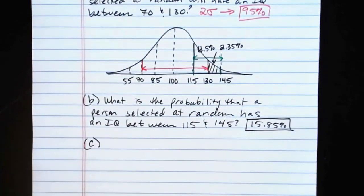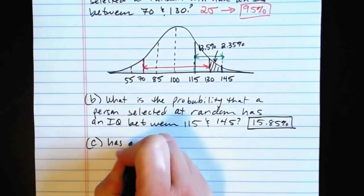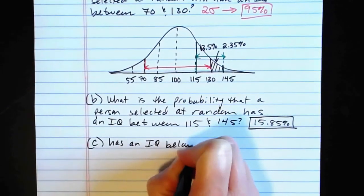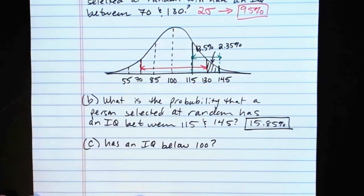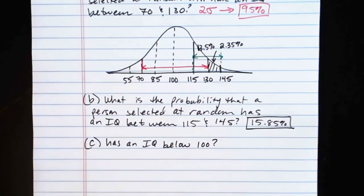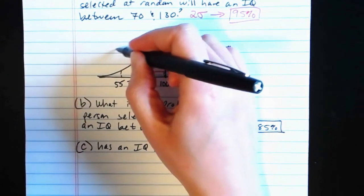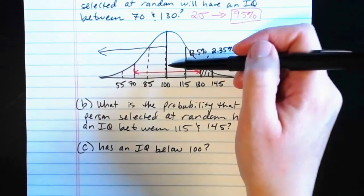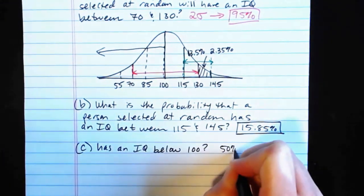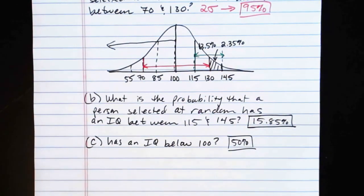As a third example, what's the probability that a person selected at random has an IQ below 100? The empirical rule doesn't answer this directly, but it gives us enough information. Below 100 means starting at 100 and going all the way to the left — that's exactly half the distribution, so there's a 50% chance of that occurring.